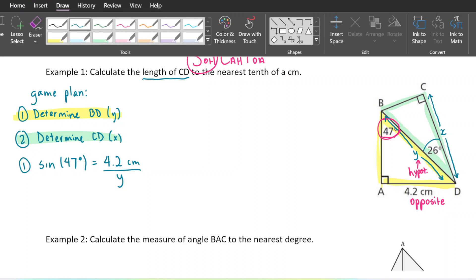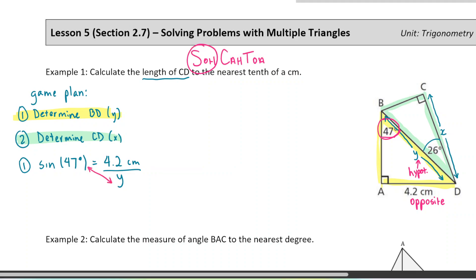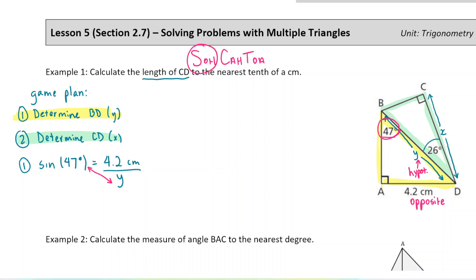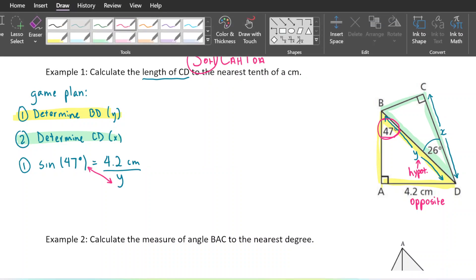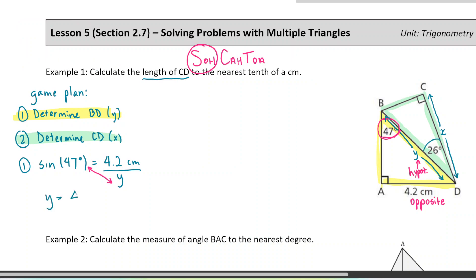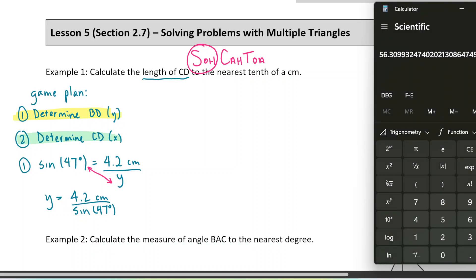Step one: sine of 47° equals the opposite, 4.2, over the hypotenuse Y. Since the unknown is in the denominator, we multiply both sides by Y and divide by sine of 47°. We get Y equals 4.2 divided by sine of 47 degrees. Putting that in the calculator gives approximately 5.742775. I'll keep a few extra decimal places to avoid rounding errors in the next step.